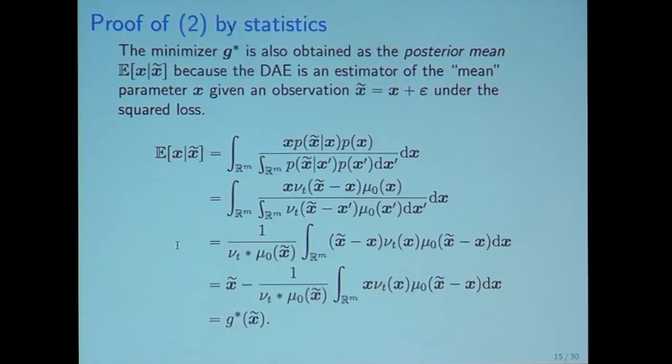There is another proof of equation two by statistics. The minimizer G star of denoising autoencoder is a statistical estimator of the mean parameter x given an observation x tilde. Then the G star denoising autoencoder should be the posterior mean x given x tilde. By calculating this posterior mean, we have the G star x tilde again. So we can believe my proof.